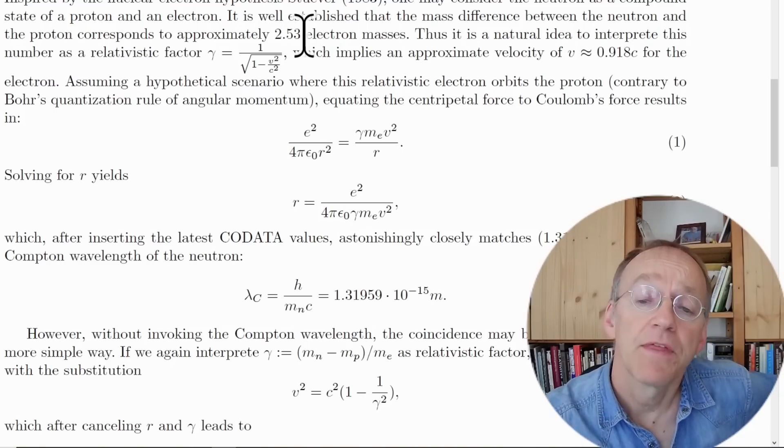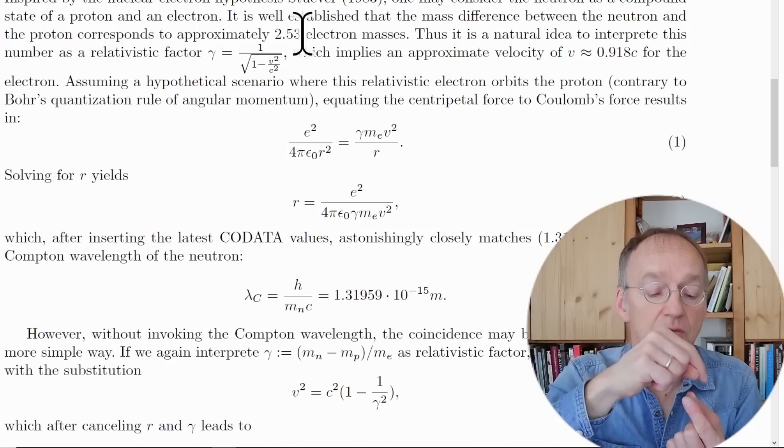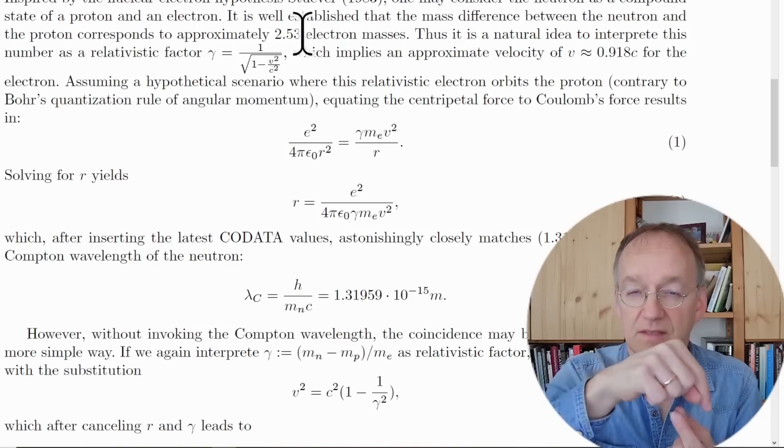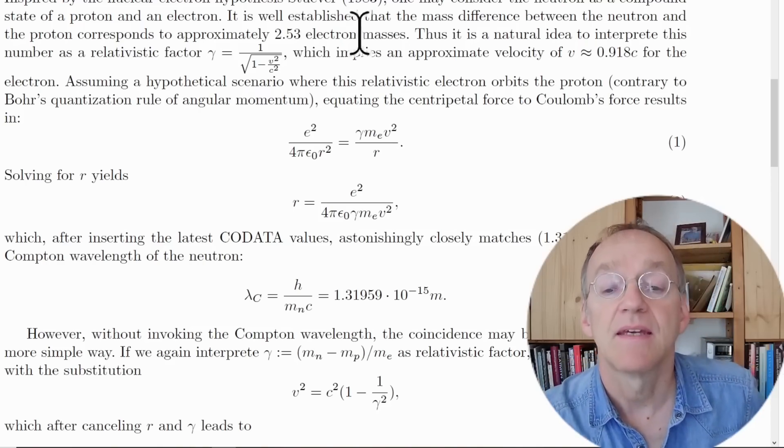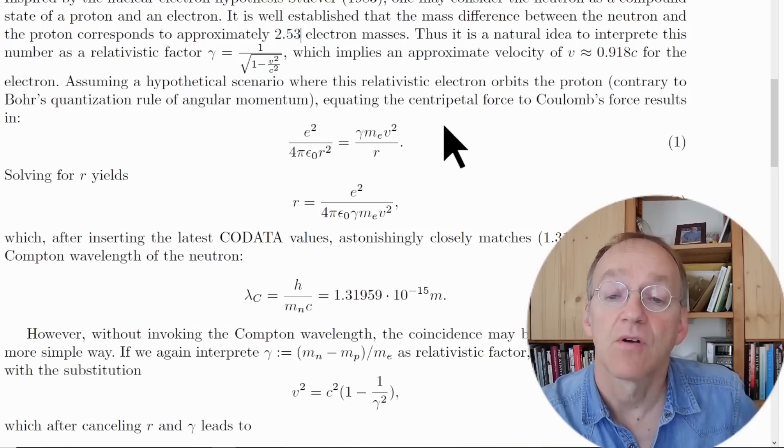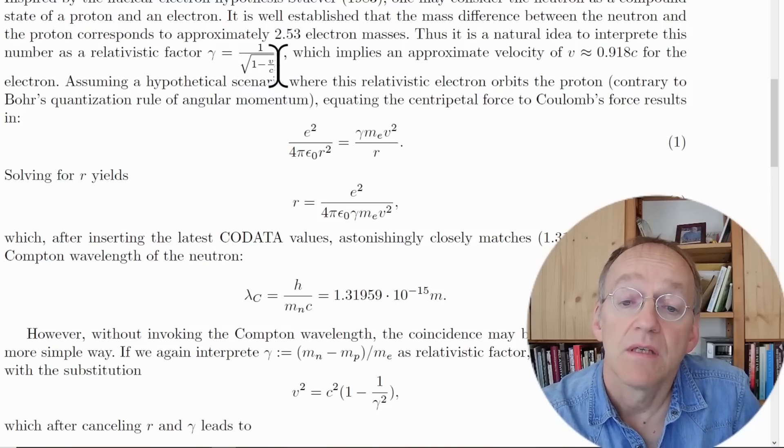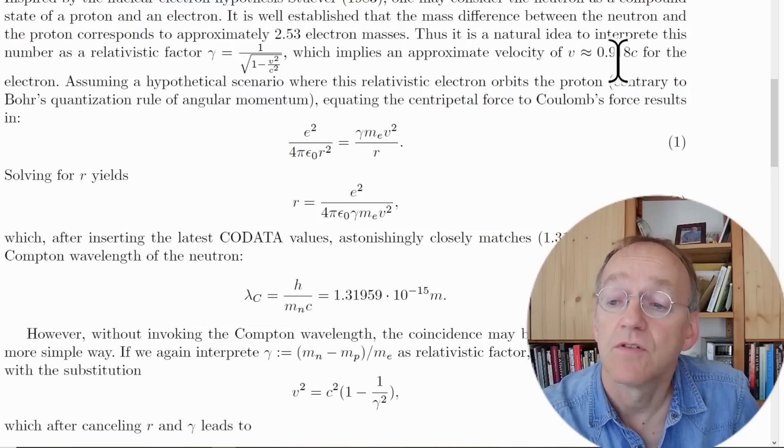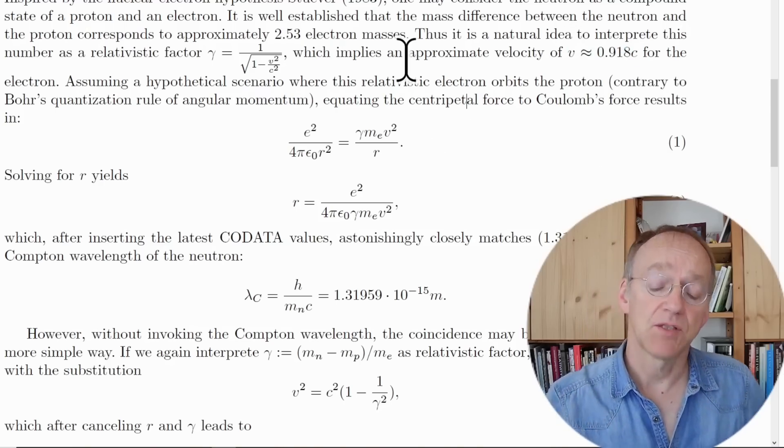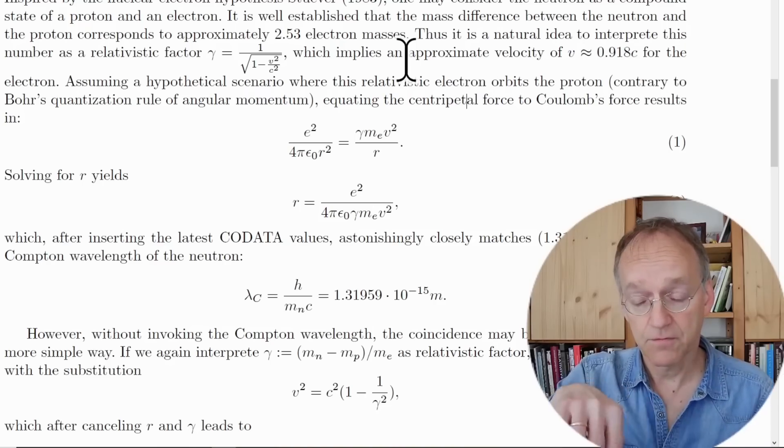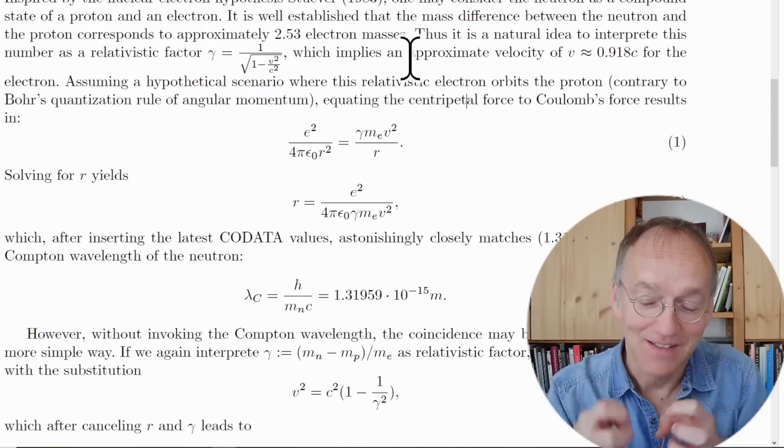However, if you think the mass difference between neutron and proton is related to the fact that the neutron is a compound state of a proton and an electron, this electron would have relativistic velocity and an increased mass by the factor of 2.53 approximately. Then you do a simple calculation. You can calculate the velocity which is close to the speed of light, something like 92 percent.